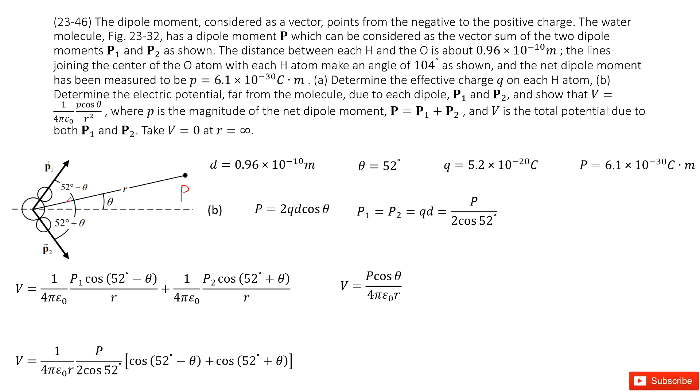And that means for this upside, this is 52 degrees minus theta. This side is 52 degrees plus theta.